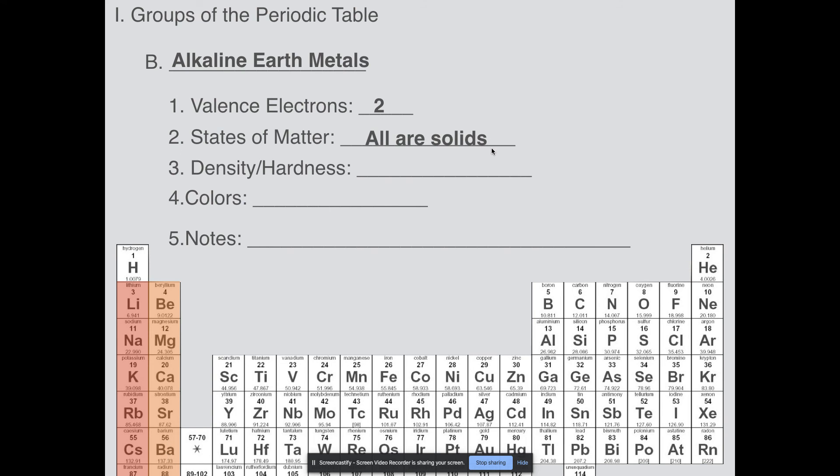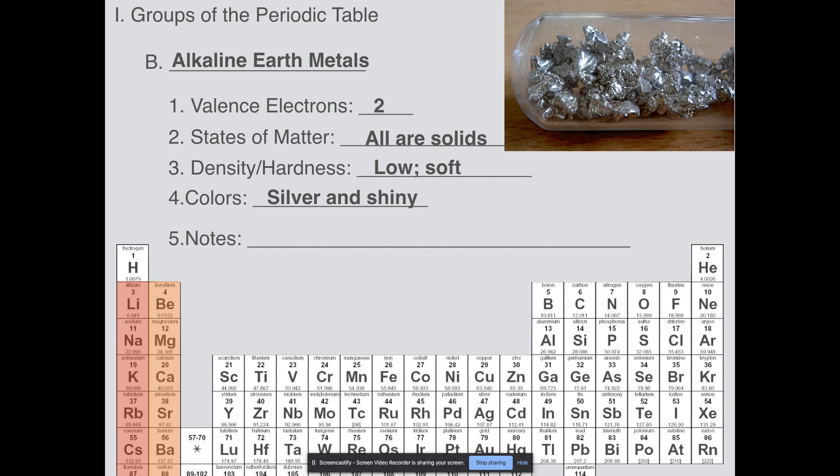They're also all solid. They have low densities and are also soft, but if we're going to be comparing them to the previous ones, their densities are actually heavier than these ones. Still light by metal standards, but relatively low. They're heavier, generally speaking, than the alkali metals. Also soft, but not as soft as the alkali metals. So alkaline earth metals are a little bit harder, but still, by comparison, pretty soft. Colors: still silver and shiny. Here's some calcium in a little test tube.